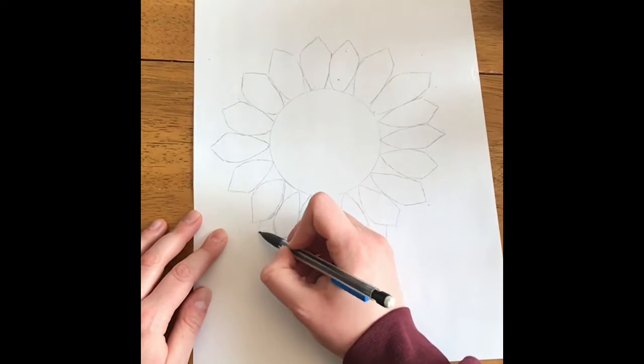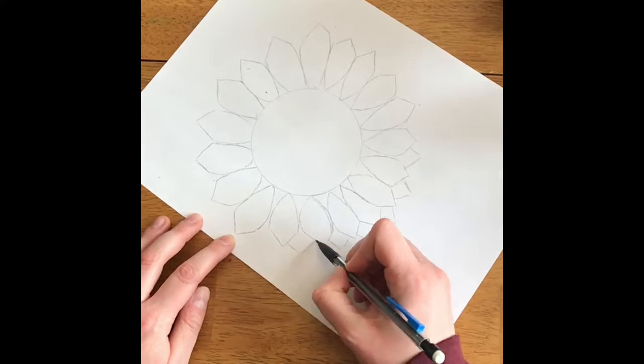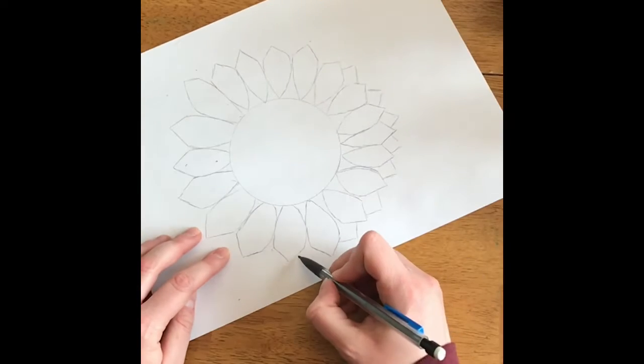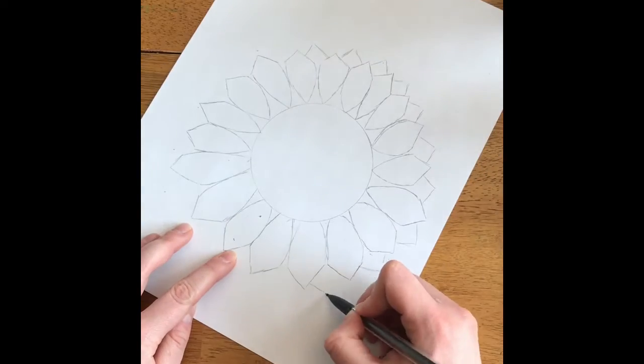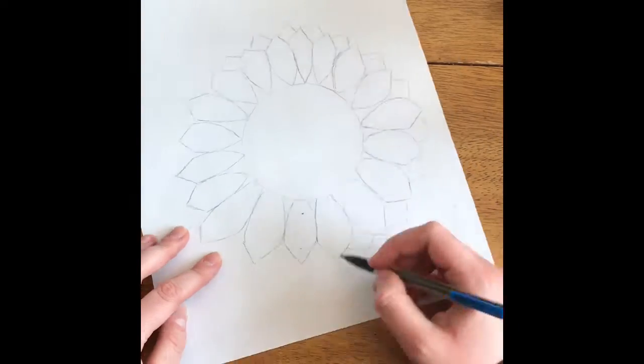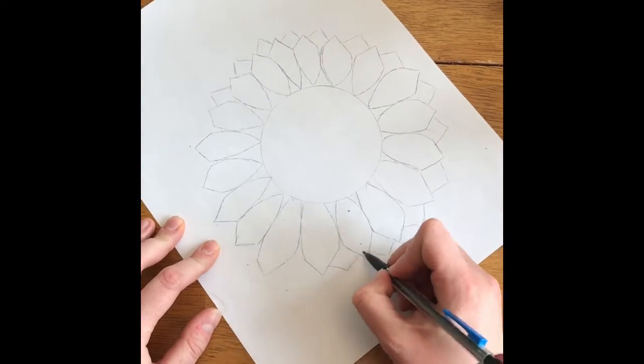Next, this is an optional step. You could add a second layer of petals, and I am just drawing little Vs in between the first petals that I drew. Once again, this is optional.